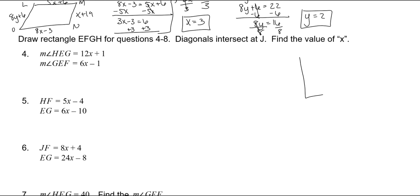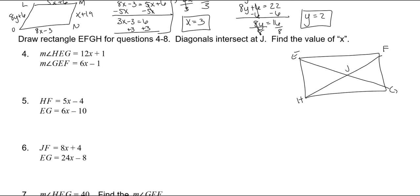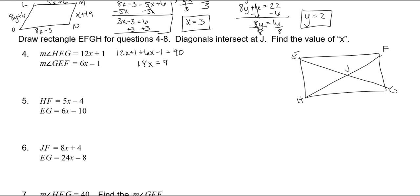We have a rectangle EFGH with diagonals intersecting at J. For the angle problem, both angles HEG and GEF added together should be 90 if it's a rectangle. So we add them and set equal to 90 degrees: 12X plus 6X is 18X, and 1 minus 1 is 0, so 18X is equal to 90. Divide 18 on both sides, and X is 5.